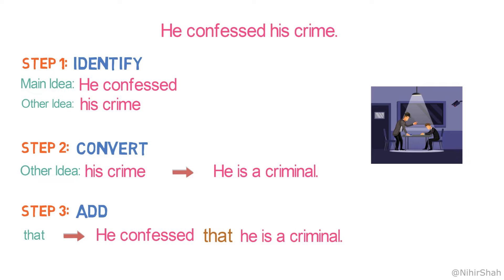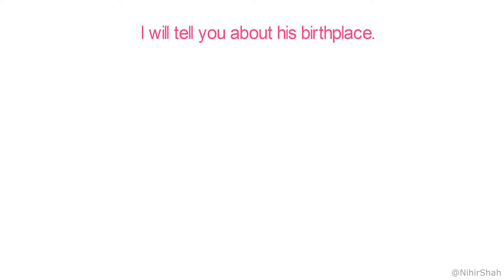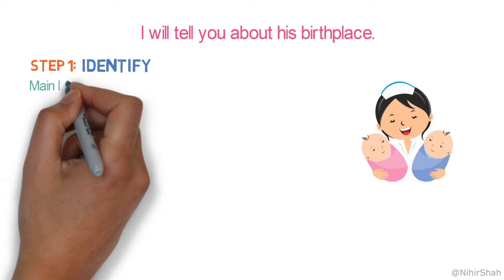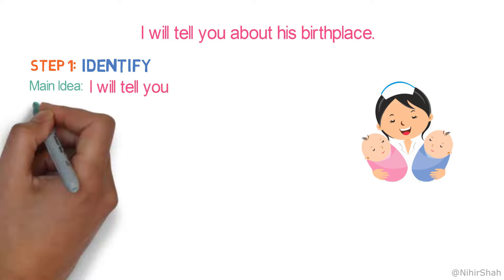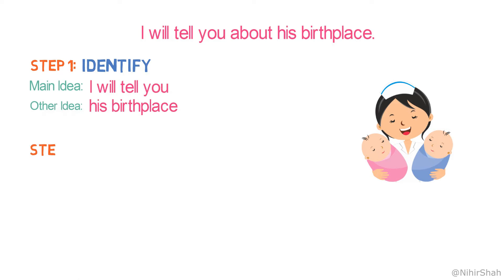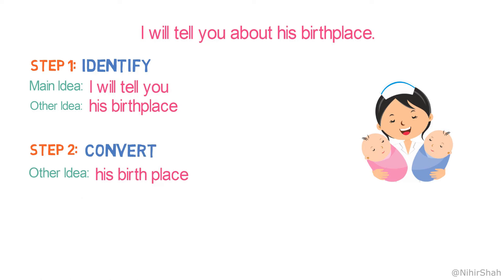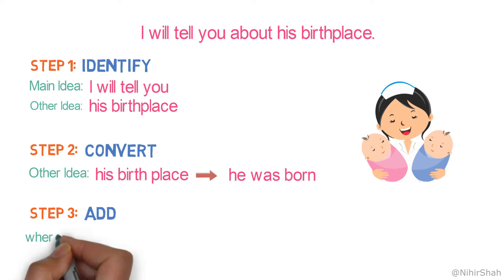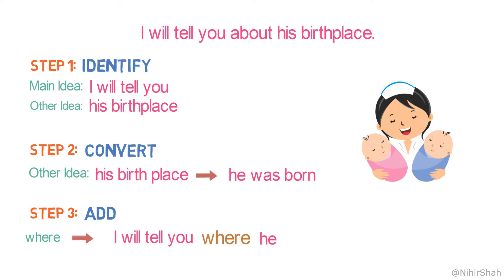Observe these steps carefully. Let's look at the next example: 'I will tell you about his birthplace.' Step one, the main idea is 'I will tell you' and the secondary idea is 'his birthplace.' Step two, we are converting the secondary thought 'his birthplace' into an independent clause 'he was born.' Step three, we are using the conjunction 'where.' So, the final sentence is: 'I will tell you where he was born.'